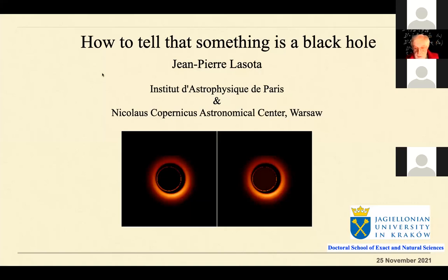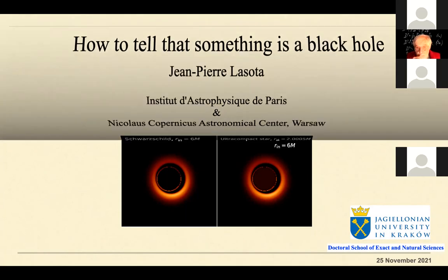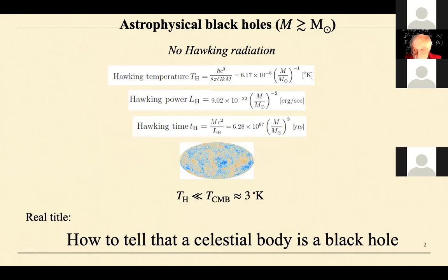Thank you very much Michal for the introduction. I will tell you how to tell that something is a black hole. As an example, you see two photos of an object — it could be a black hole or maybe a compact star. We'll be talking only about astrophysical black holes, meaning black holes whose mass is larger than one solar mass.